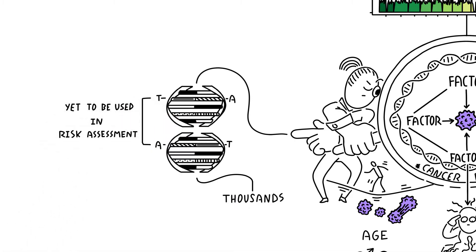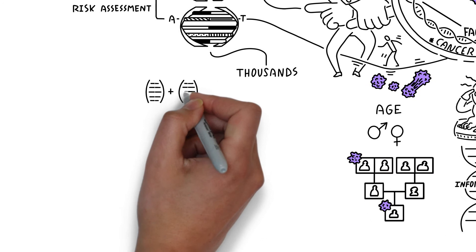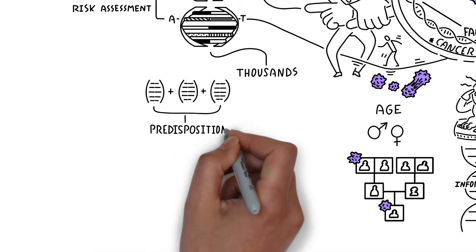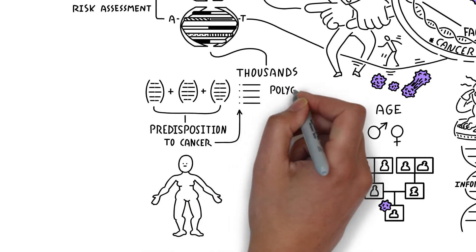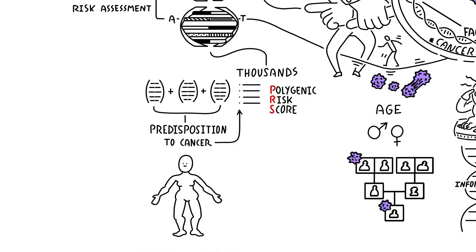One reason for this is that each genetic variant has only a small effect on cancer risk. However, these individual variants can be combined into a score that summarizes one's genetic predisposition to cancer. We call this a polygenic risk score, or a PRS.